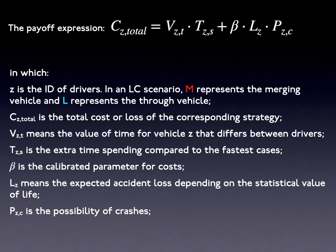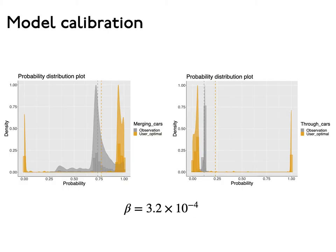I will introduce in detail how we model the crash severity in the next video. In this equation, beta is the only parameter that needs to be calibrated. We calibrated it using the NG-SIM dataset that was collected from the US-101 highway. Behaviors with significant acceleration or deceleration values that exceed thresholds can be judged as specific strategies in observations. The value of beta can then be confirmed by comparing the actual and model probability distributions of strategies.